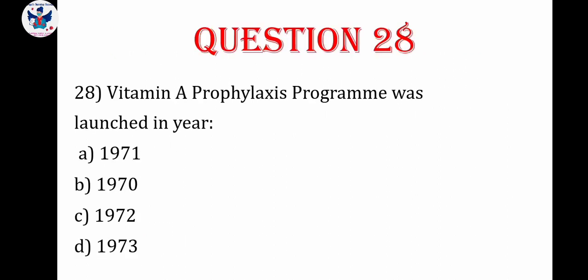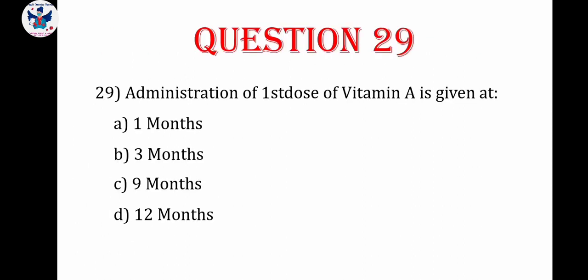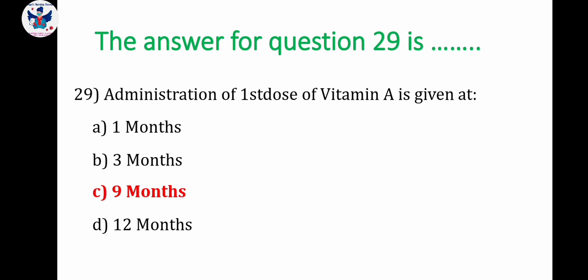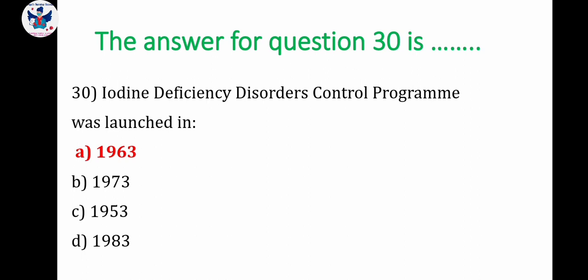Question number 28: the vitamin A prophylaxis program was launched in the year — 1971, 1970, 1972, or 1973. The correct answer is 1970. Question number 29-30: the control program was launched in the year — 1963, 1973, 1953, or 1983. The correct answer is 1963.